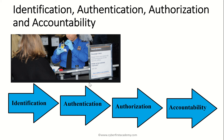Then you go to the authorization piece. Authorization is saying you're authorized to access this data — you're authorized to access the sales folder, you're authorized to access the purchasing folder. Going back to the real-world example, the TSA agent is going to stamp your ticket saying this person is legit, this person is authorized to pass this gate.